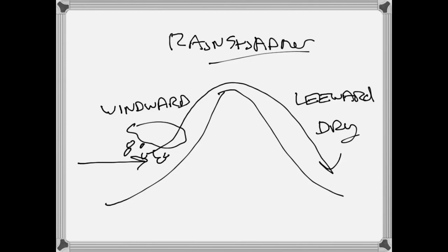For example, Mount Everest in the Himalayan mountains at 29,000 feet has a serious rain shadow effect. The Sierra Nevada mountains in North America, the Rocky Mountains, and the Atacama in South America all have big rain shadow effects. Anywhere you've got large mountainous zones, you're going to have a big rain shadow effect.